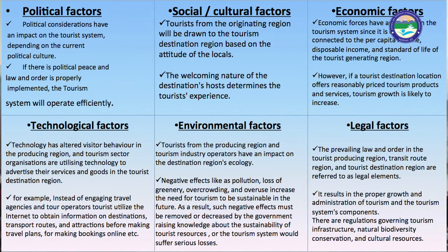Environmental factors: tourists from the producing region and tourism industry operations have an impact on the destination region's ecology. Negative effects like pollution, loss of greenery, overcrowding, and overuse increase the need for tourism to be sustainable in the future. Such negative effects must be removed or decreased by the government. Legal factors: the prevailing law and order in the tourist producing regions, transit route regions, and tourist destination region are referred to as legal elements, resulting in the proper growth and administration of tourism and the tourism system components.